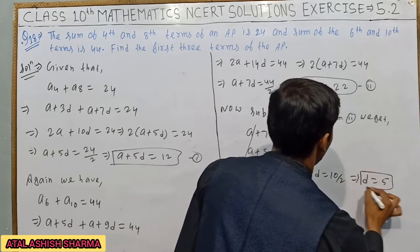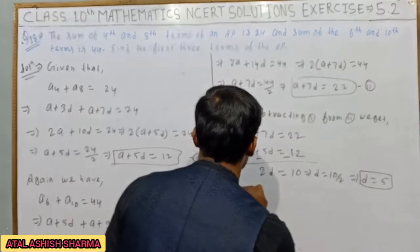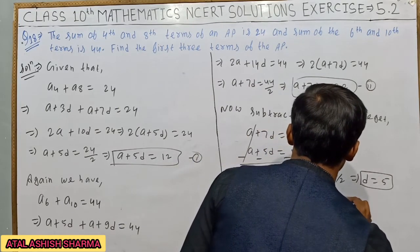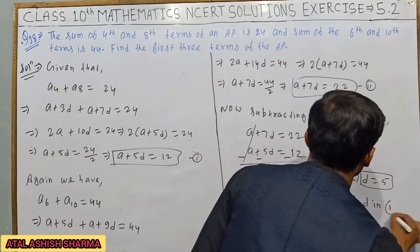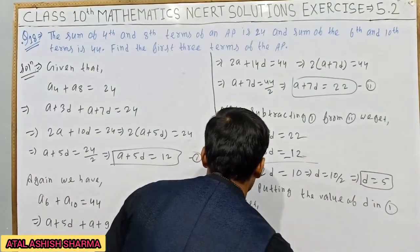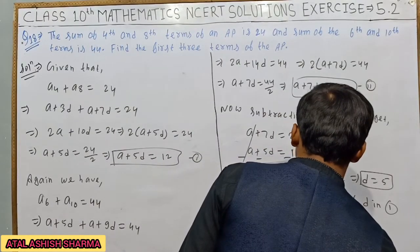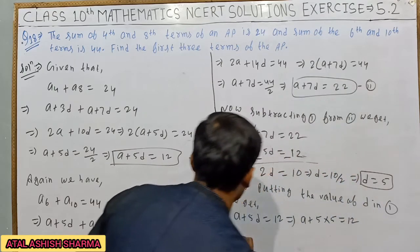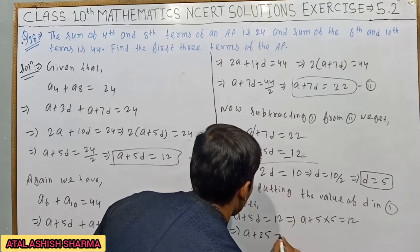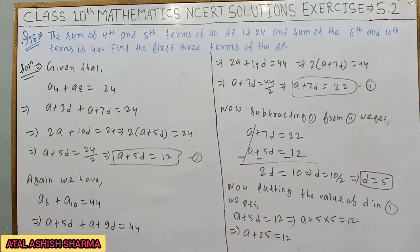Now putting the value of d in the first equation. We get a plus 5d equals 12, which implies a plus 5 into 5 equals 12. So a plus 25 equals 12.